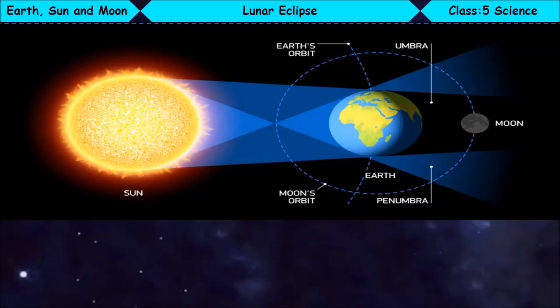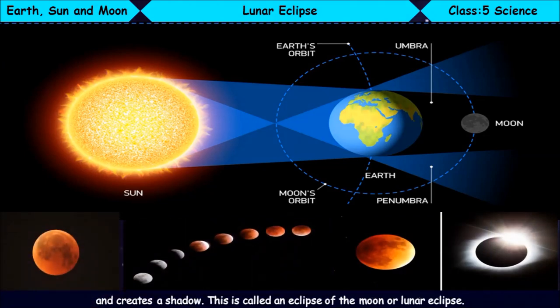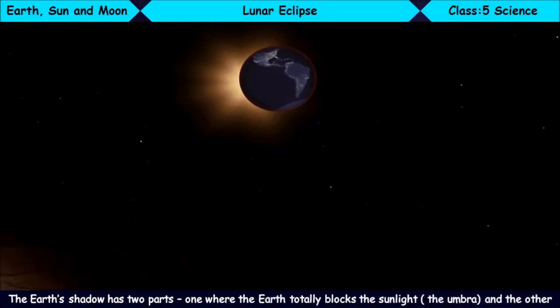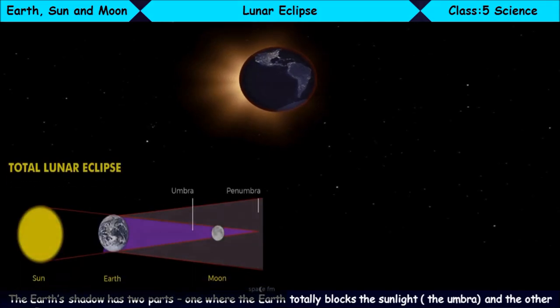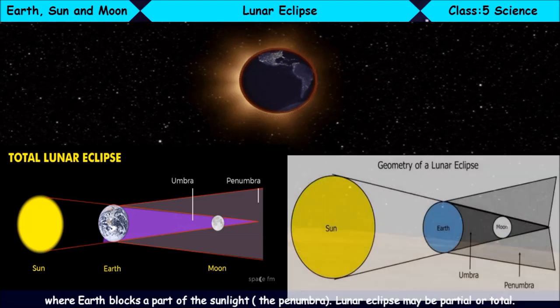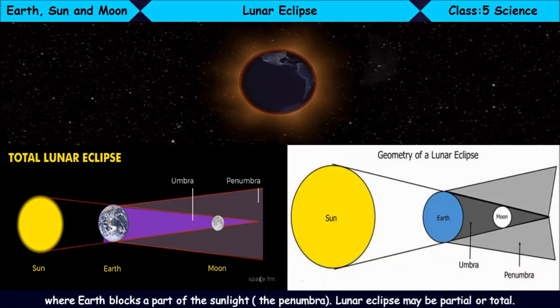Lunar Eclipse. When the Earth comes between the Sun and the Moon, it blocks a lot of the sunlight from reaching the Moon and creates a shadow. This is called an Eclipse of the Moon or Lunar Eclipse. The Earth's shadow has two parts: one where the Earth totally blocks the sunlight, the Umbra, and the other where the Earth blocks a part of the sunlight, the Penumbra.